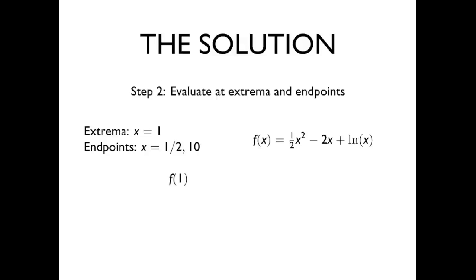Starting with the extremum, f of 1 comes out to 3 over 2. f of 1 half becomes minus 7 over 8 plus ln of a half, which is approximately negative 1.57. And finally, f of 10 is 70 plus ln of 10, which is about 72.3.